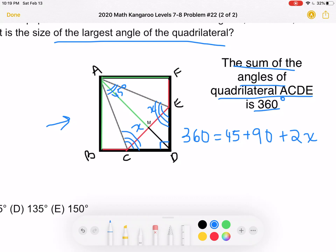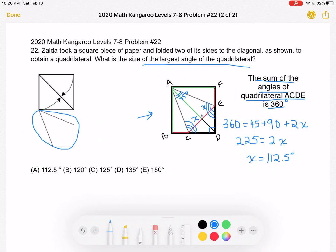And then if we add 45 plus 90, we get 135, subtracting that from 360, we get that 225 is equal to 2X. Dividing by 2, we get that X is equal to 112.5 degrees, which is answer choice A. Thank you so much for watching, and please subscribe if you would like to see more videos.